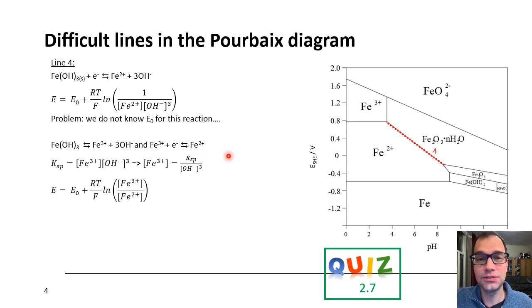So, we can split this reaction in two. And then we can do some nice stuff. Because for the first reaction, we can take the solubility product. As you can see here, as we did on the previous slide. And we can recalculate that the iron 3 concentration is the solubility product divided by the OH minus concentration to the power 3.